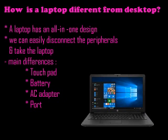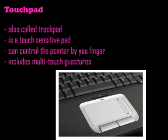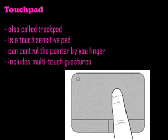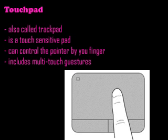Some other main differences are the touchpad, battery, AC adapter, and port. First, the touchpad — it is also called a trackpad. It is a touch-sensitive pad, meaning wherever we touch, that place is sensible. We can control the pointer by dragging on the pad with our finger. Nowadays, many touchpads have multi-touch gestures, which we will study in the next chapter.